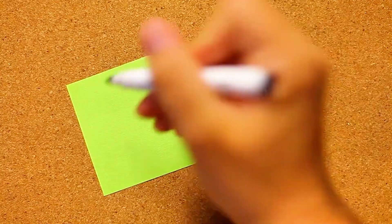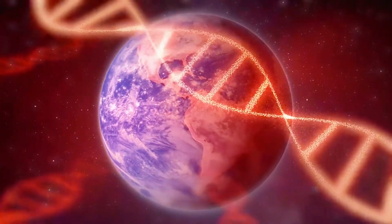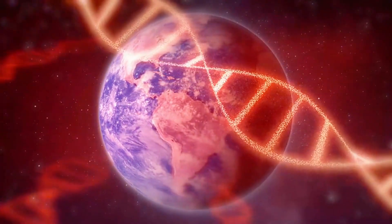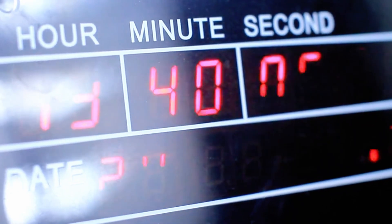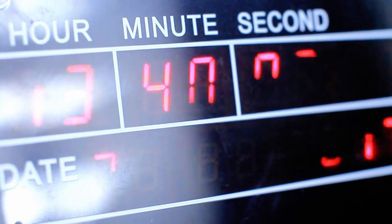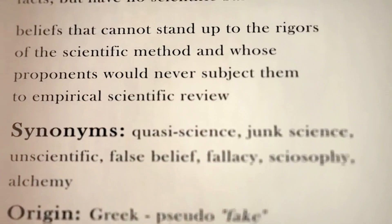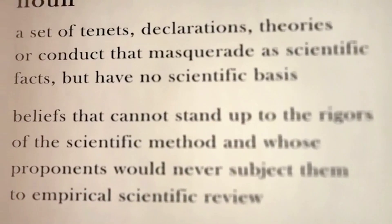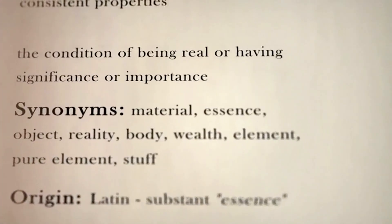Let's start with the basics. At the dawn of the 20th century, scientists believed time and space were absolute. A second was always a second, and a meter was always a meter. The universe seemed like a giant, predictable clock. But Albert Einstein, a young patent clerk with no formal academic fame, asked a simple yet radical question.